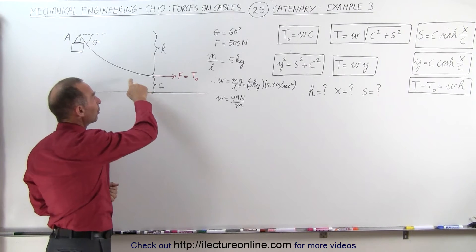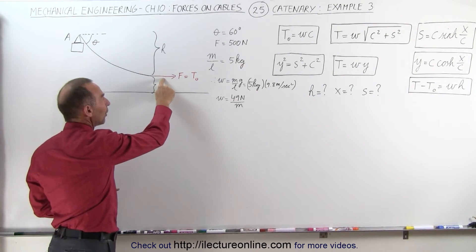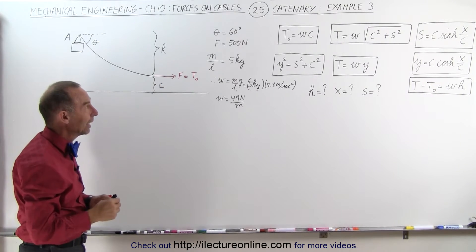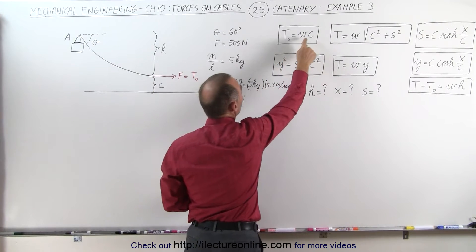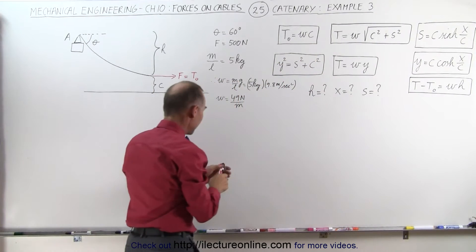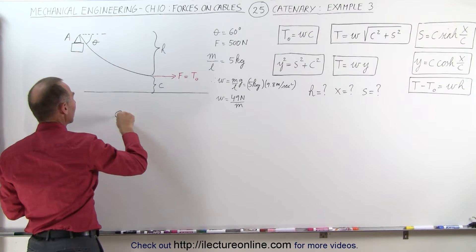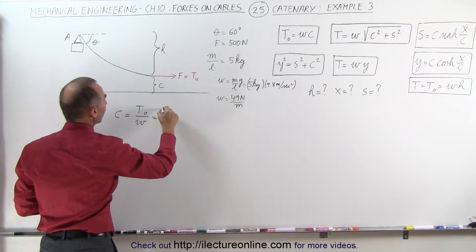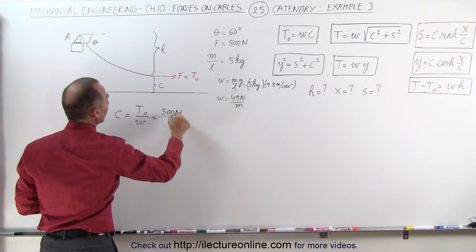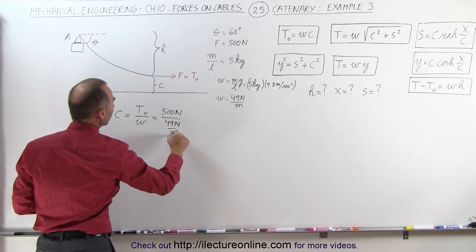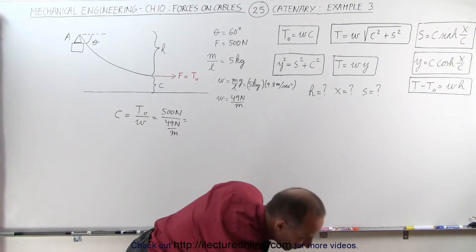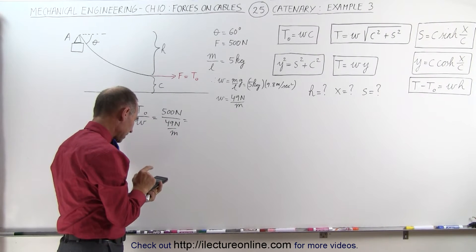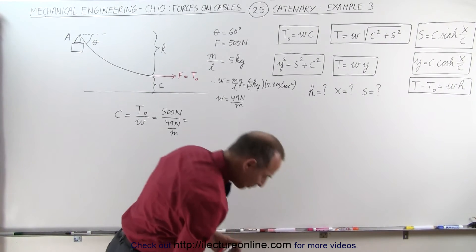If we pull this cable such that the force acts in a horizontal direction, that force must equal the minimum tension in the cable. We have an equation for the minimum tension which allows us to find c. So c equals the minimum tension divided by the weight per unit length, which is 500 newtons divided by 49 newtons per meter, giving us c = 10.2 meters.